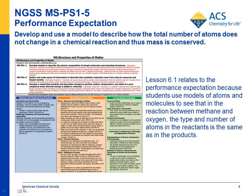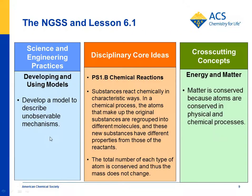If you're in an NGSS state, there's a performance expectation MSPS 1.5, which says: develop and use a model to describe how the total number of atoms does not change in a chemical reaction and thus mass is conserved. Lesson 6.1 relates to this exactly, because we use models of molecules to show that the same type and number of atoms in the reactants are in the products, nothing new is produced, and mass is conserved. The foundation boxes show that we develop and use models of molecules made up of atoms, that substances react chemically in characteristic ways — methane reacts with oxygen to form carbon dioxide and water — and that the total number of each type of atom is conserved and thus mass doesn't change. For cross-cutting concepts, matter is conserved because atoms are conserved in physical and chemical processes; in this case, it's a chemical process.